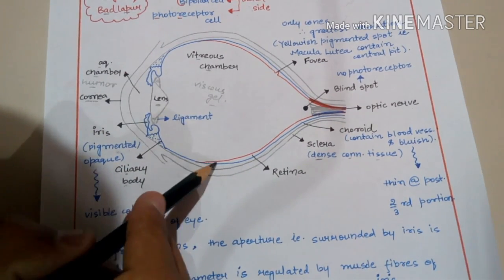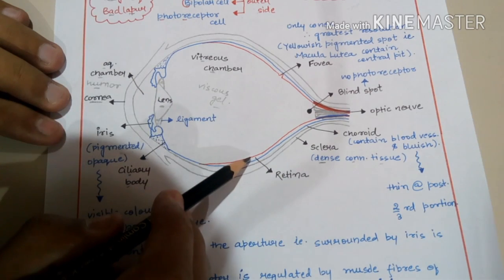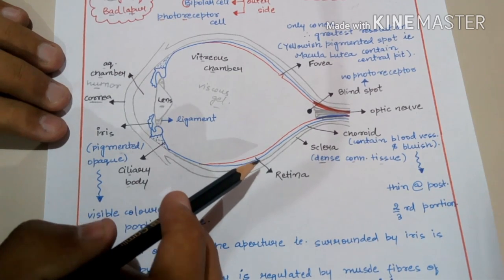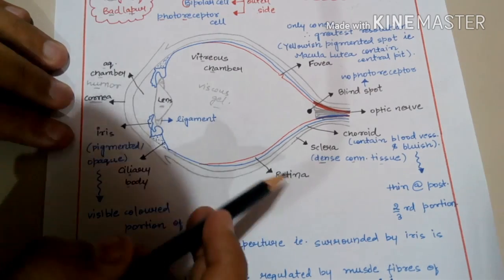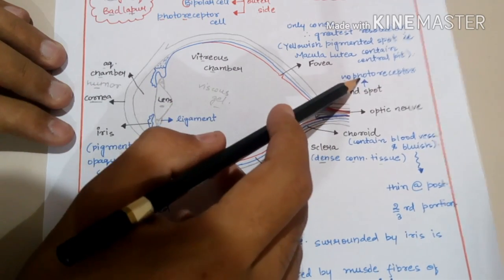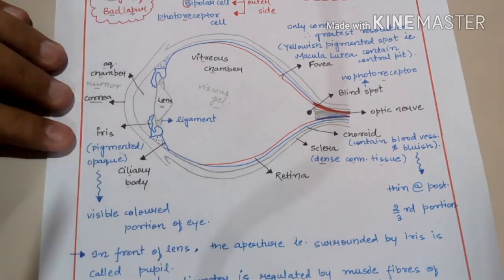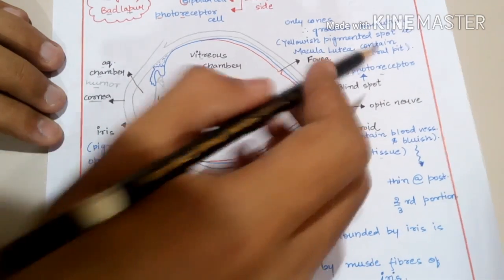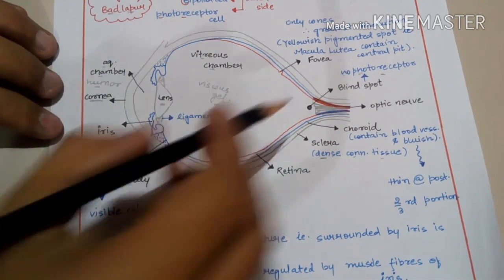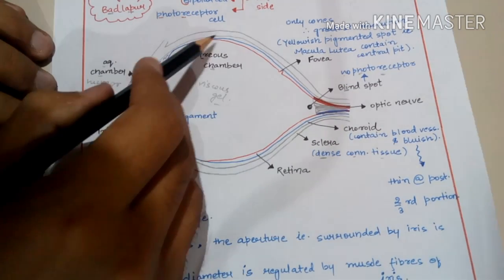The innermost layer is the retina, shown here with a red pen. The retina is divided into three layers: the ganglionic cell layer, bipolar cell layer, and the photoreceptor cell layer. At the posterior end there is a spot known as the blind spot. It is called the blind spot because there are no photoreceptors there — photo means light, receptor means proteins that catch signals from light — so it is unable to sense the presence or absence of light.